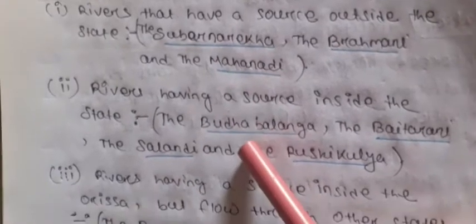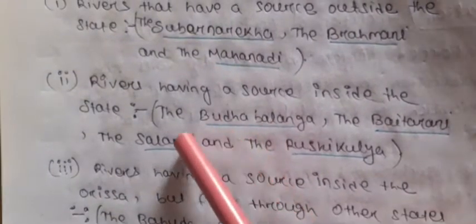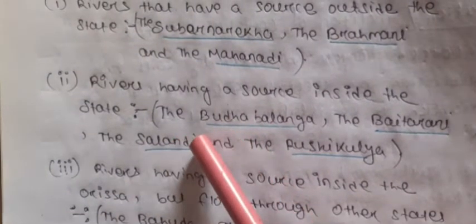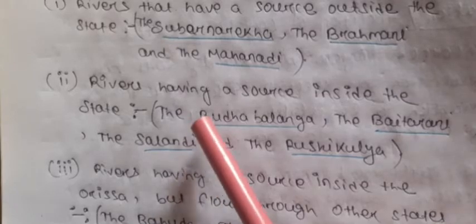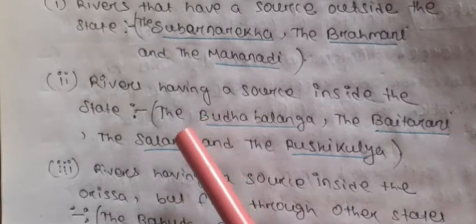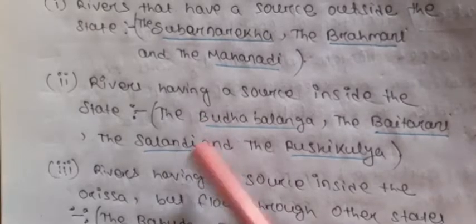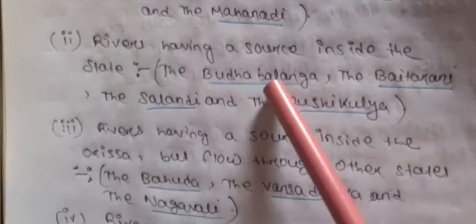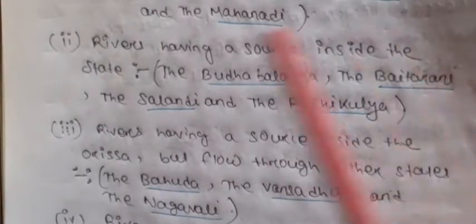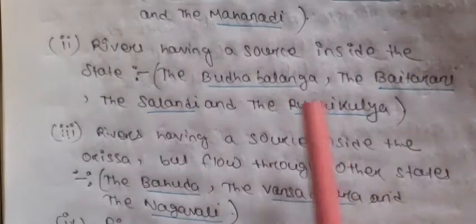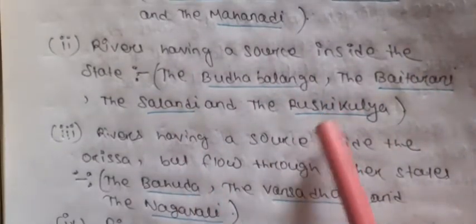The second group is rivers having a source inside the state — rivers whose origin is inside Odisha. These are Budha-Balanga, Vaitarani, Salandi, and Rusi-Kulya.